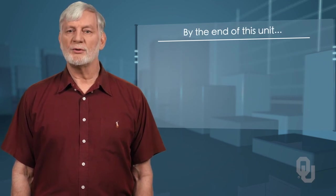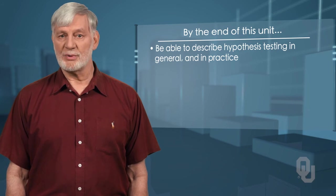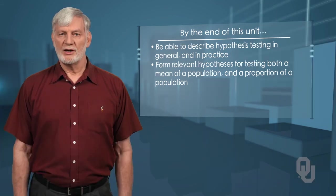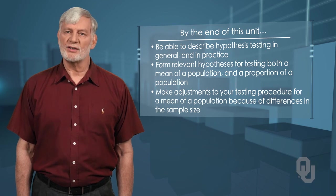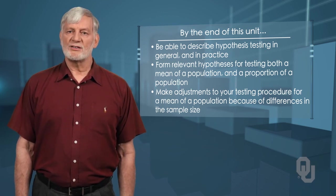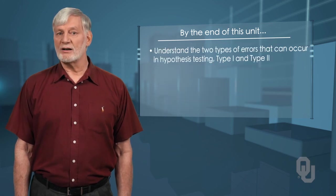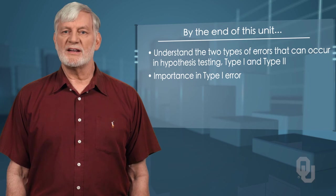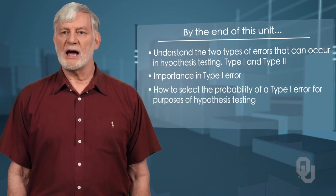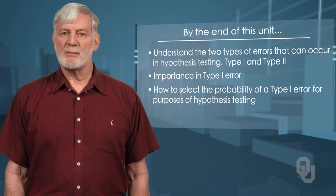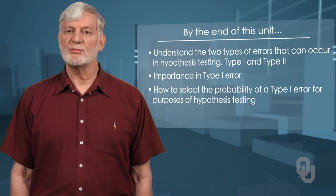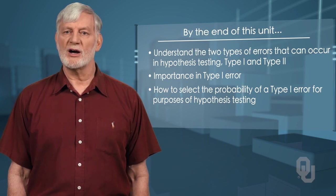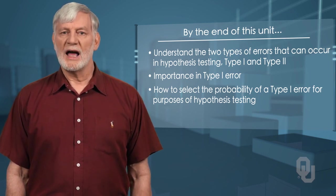By the time you finish this unit, you will be able to describe hypothesis testing in general and in practice, and form relevant hypotheses for testing both a mean of a population and a proportion of a population. You will be able to make adjustments to your testing procedure for a mean because of differences in sample size. You will also understand the two types of errors that can occur in hypothesis testing: the type one error and the type two error. You will understand the important role played by the type one error and how to select its probability for purposes of hypothesis testing. I promise that by the time you have worked your way through this unit's material, you will see the world through different eyes — wide open with an appreciation of the process of how those who have come before us have added to what we know and what we believe to be true.